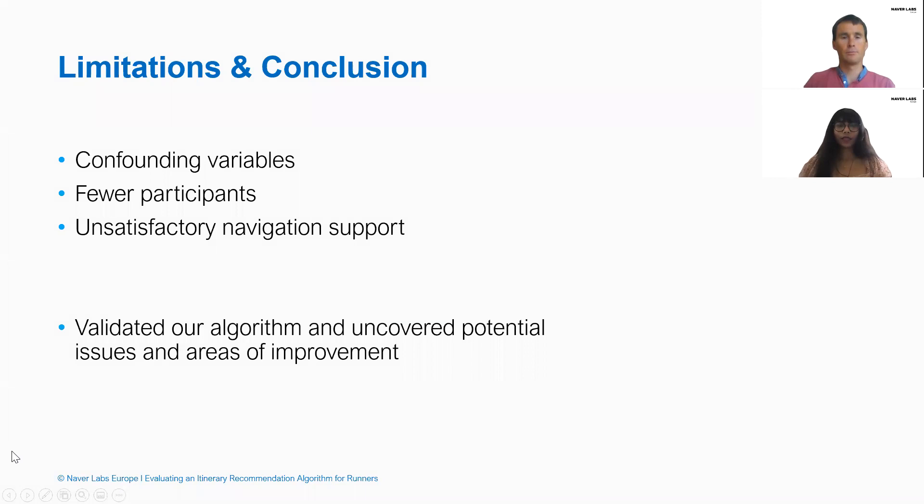Finally, we acknowledged that our evaluation setting came with challenges and limitations. In a real-world usability test as ours, it is difficult to eliminate the effect of confounding variables. We also had fewer participants than originally planned, which is a drawback for forming reliable statistical data. Other issues also included unsatisfactory navigation. Despite the challenges, we validated our algorithm and outlined suggestions for future recommender systems for runners.